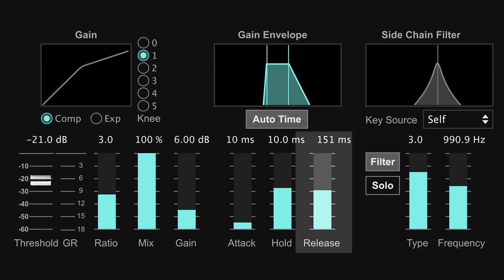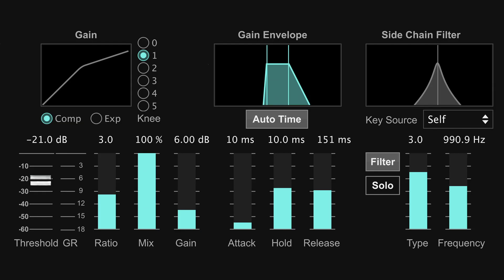Next up is release, which sets the speed at which the compressor lets go once the signal goes back under the threshold. A release time that's too short can produce a choppy or jittery sound, whereas a release time that is too long can result in a signal sounding squashed.